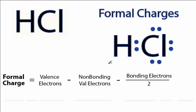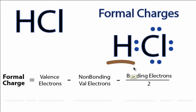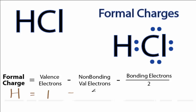To calculate the formal charges for HCl, let's first take a look at hydrogen. When we look on the periodic table, hydrogen is in group one, so it has one valence electron. We'll subtract the non-bonding valence electrons, and all the electrons for hydrogen here are involved in chemical bonds with the chlorine, so that's zero.